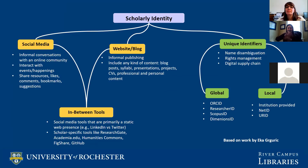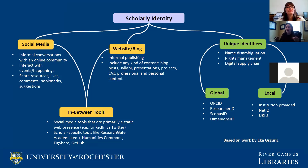Scholarly identity is a network in and of itself, with a lot of different components. There is social media that Moriana talked about, websites and blogs, in-between tools that are kind of social media but a little more website-like, and then there are identifiers, which Moriana covered and I will go into a little bit more.